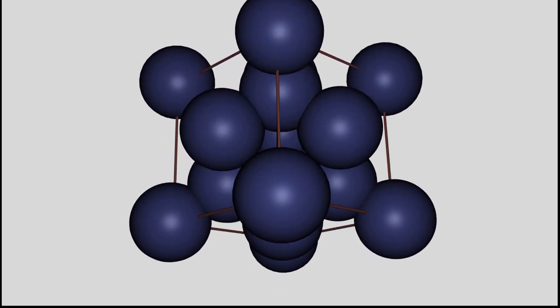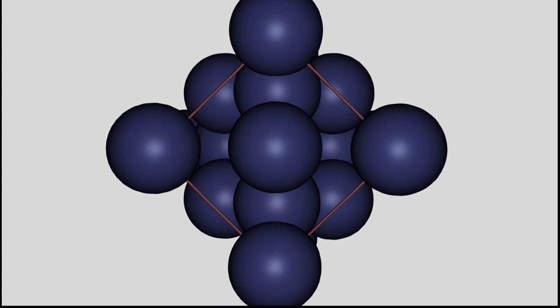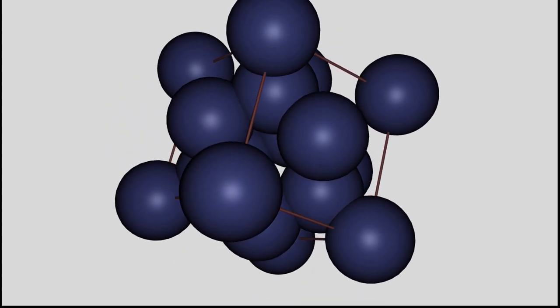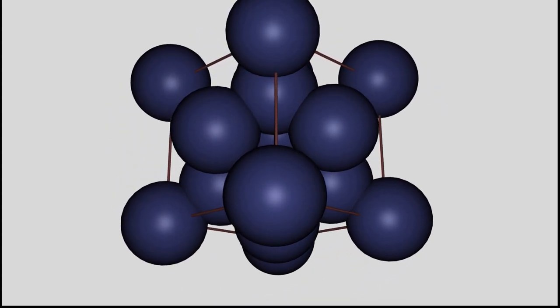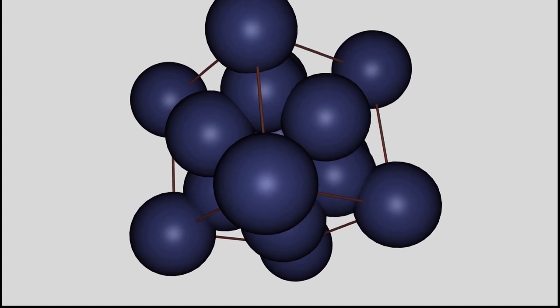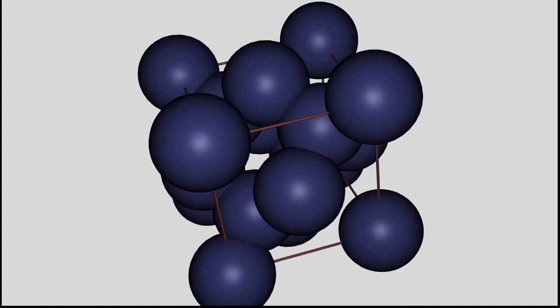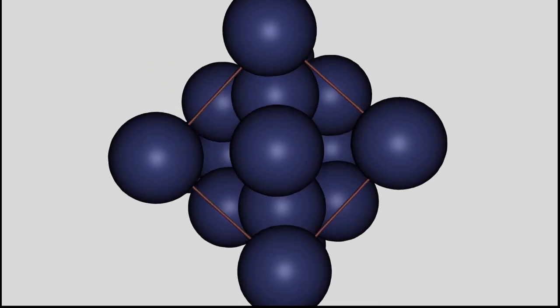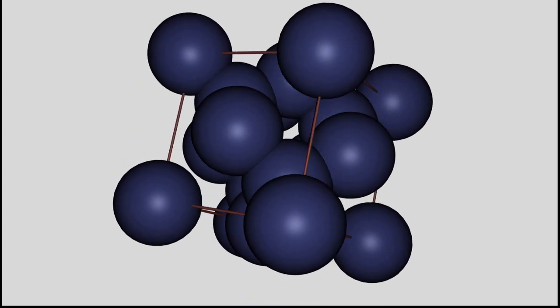Closer to the reality is the so-called Calotte model, where the atoms are represented by full size spheres. The bonds conform to the overlapping areas of the single spheres.